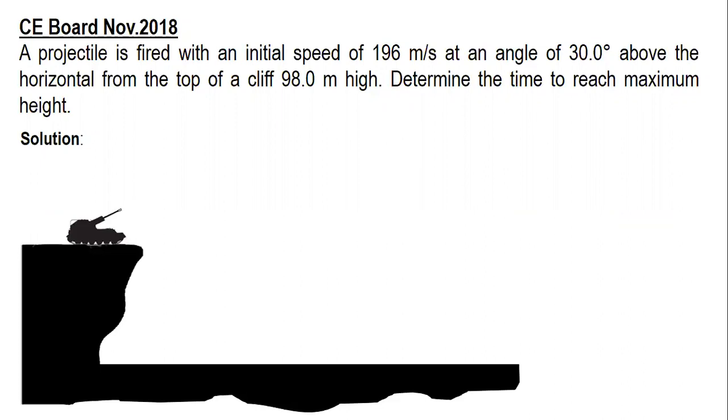So a projectile is fired with an initial speed of 196 meters per second at an angle of 30 degrees above the horizontal from the top of a cliff 98 meters high. Determine the time to reach maximum height. So the motion is above the ground, and we need to find the time to reach maximum height.